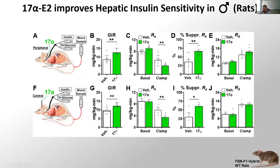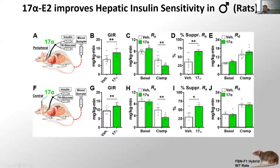The estrogen improves hepatic insulin sensitivity as measured by AKT phosphorylation and FOXO1 phosphorylation, but only in wild types and not knockouts. To circumvent the effects of reduced food intake, we infused the estrogen acutely and performed a hyperinsulinemic euglycemic clamp. A higher glucose infusion rate indicates greater insulin sensitivity across the whole animal, and you can parse peripheral tissue versus liver contribution via rates of glucose appearance and disappearance. We found that infusing this estrogen under hyperinsulinemic conditions increases glucose infusion rates, due to a massive suppression of endogenous glucose production or gluconeogenesis, with no change in the rate of disappearance.